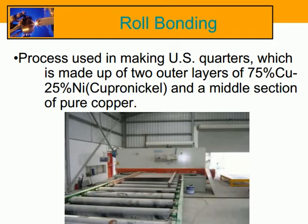The roll bonding process is used in making U.S. quarters, which are made up of two outer layers of 75% copper and 25% nickel, and a middle section of pure copper.